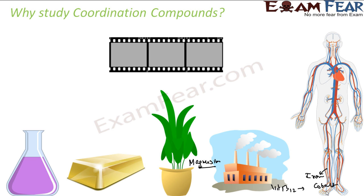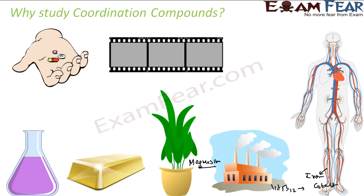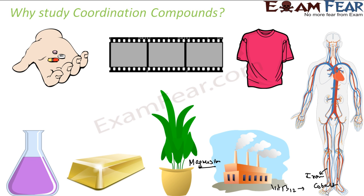Coordination Compounds are used in black-and-white film photography. In medicine, many chelating agents are Coordination Compounds. They are also used in electroplating, textile dyeing — to dye fabric red, blue, and other colors. So Coordination Compounds have a huge implementation in our daily life, from blood and hemoglobin to chlorophyll in plants. This clearly tells us about the importance of Coordination Compounds in day-to-day life.